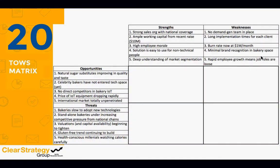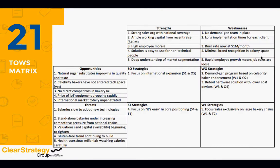Now we're going to do something called a TOWS Matrix — TOWS is SWOT spelled backwards. We're going to take the same list of strengths, weaknesses, opportunities, and threats and put them against a two-by-two grid. By combining strengths with opportunities, weaknesses with opportunities, and these various elements together, we brainstorm a list of possible strategic choices or strategic actions that leverage different combinations of these factors.